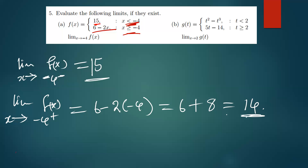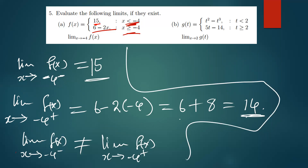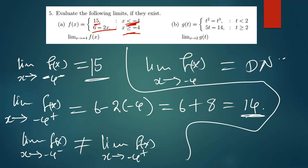6 plus 8 equals 14, so the right-side limit is 14. Now, 15 and 14 are not equal. Since the limit from the left (15) is not equal to the limit from the right (14), this implies that the limit of f(x) as x approaches negative 4 does not exist. We found 15 on the left and 14 on the right, so the limit does not exist.